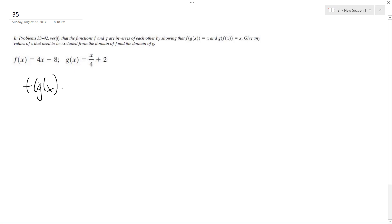So f of g of x, I end up with four quantity, and I'm going to plug in g of x for each x value in f of x plus two minus eight. Let's distribute the four across what's inside the parentheses. I get four x over four plus eight and then minus eight. So these eights cancel out and then the fours cancel each other out, we're just left with x.